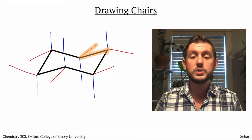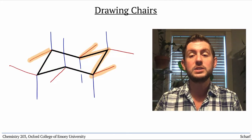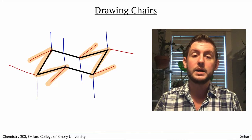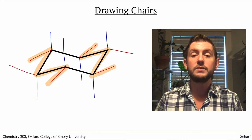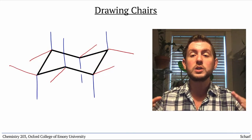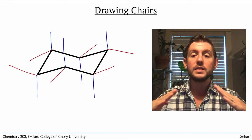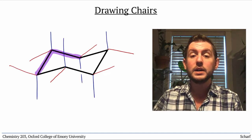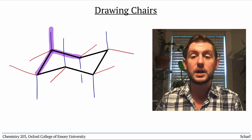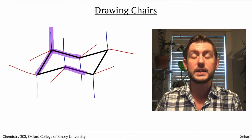The equatorial substituents on each side make a W or M. And the direction of the axial substituent at a given location corresponds to the angle of the carbon it's coming out of. This part of the chair is angling up, so its axial substituent is up, while this part of the chair is angling down, so its axial substituent is down.